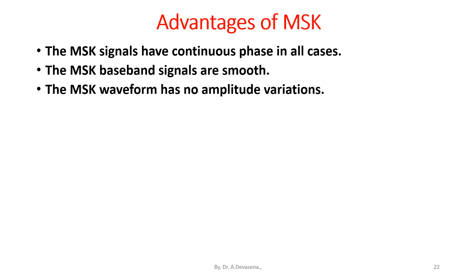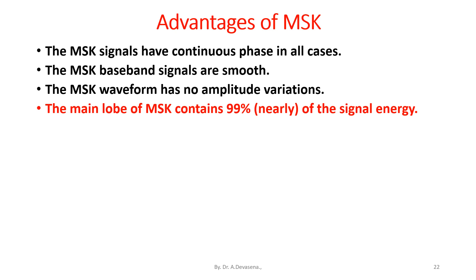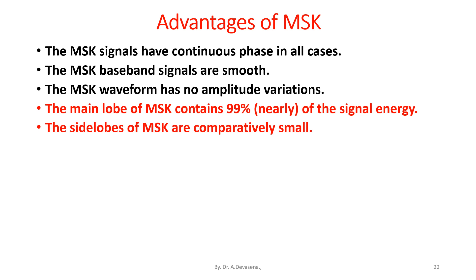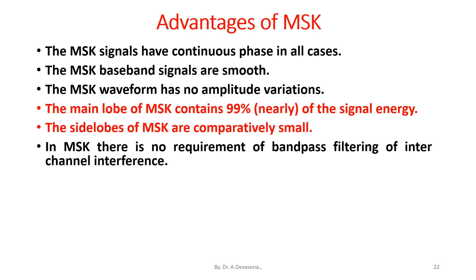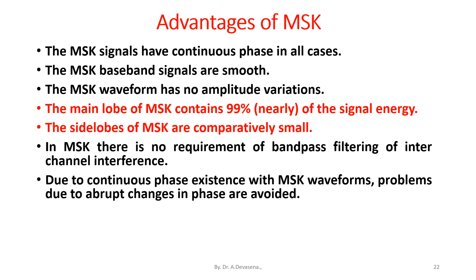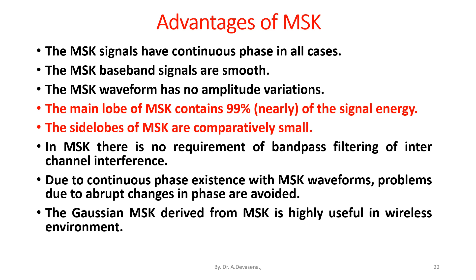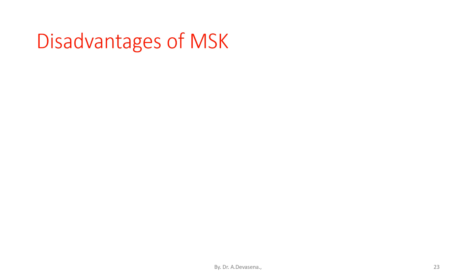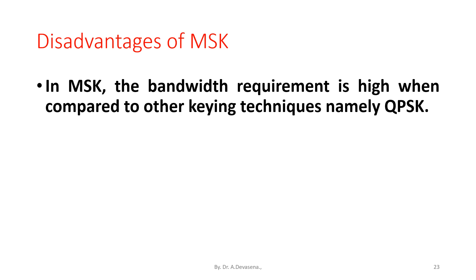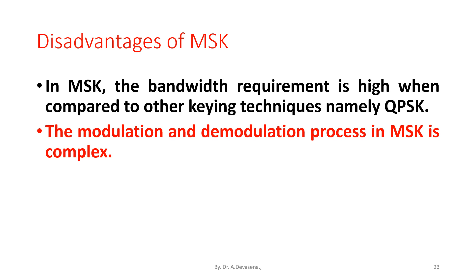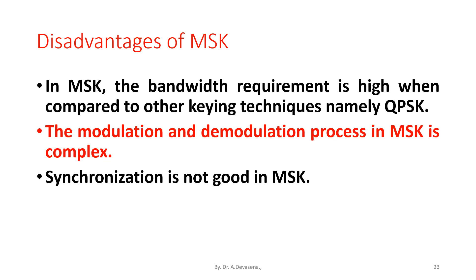The main lobe of the MSK signal contains 99% of the signal energy. In MSK there is no requirement of bandpass filtering for interchannel interference. Due to continuous phase in MSK waveforms, problems due to abrupt changes in phase are avoided. The Gaussian MSK derived from MSK is highly useful in wireless environments. Disadvantages of MSK: the bandwidth requirement is high compared to other keying techniques; the modulation and demodulation process in MSK is complex; and synchronization is not good in MSK.